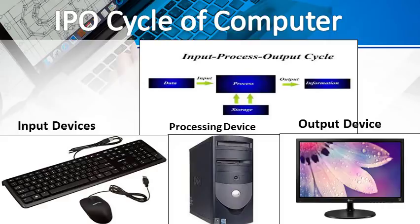In the same way, a computer works on input, processing and output. Let us see one by one. Input: the data and instructions that we enter into a computer are called inputs. We input data using a keyboard and mouse. Processing: working on the data is called processing. The CPU works on the data and does all the thinking and calculation. Output: output means the final result. When the CPU finishes processing the data, the output is displayed on the monitor screen. Monitor and printer are the most common output devices.